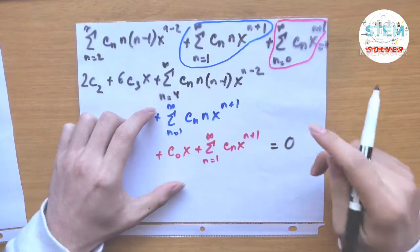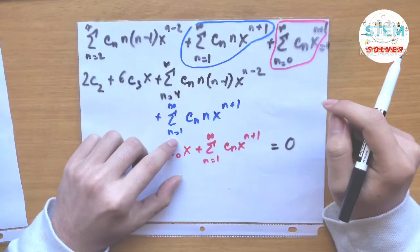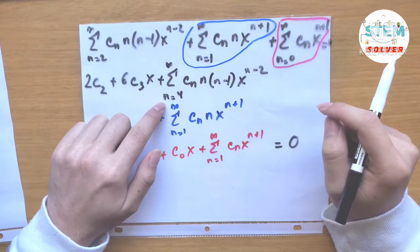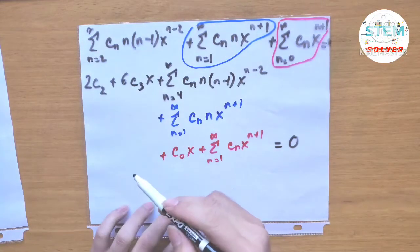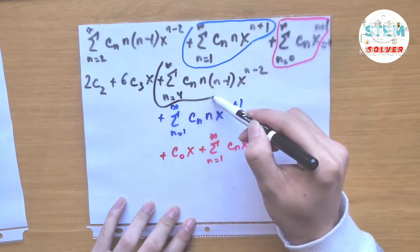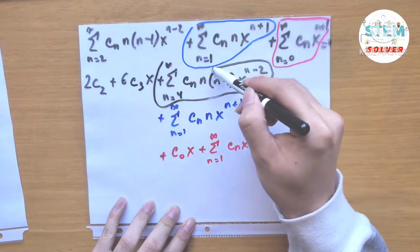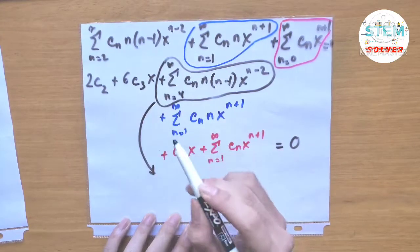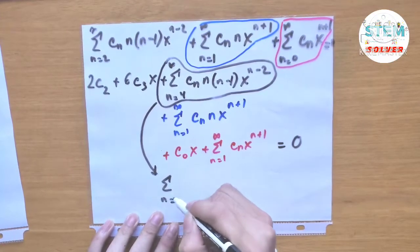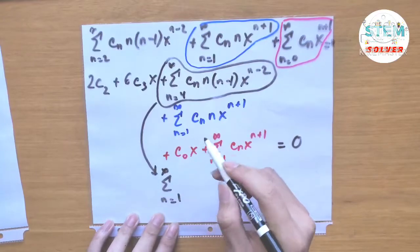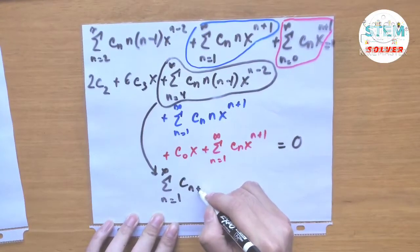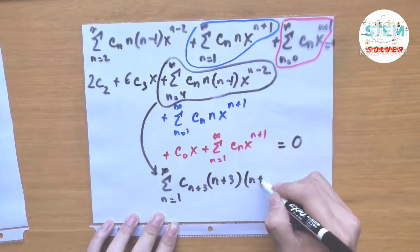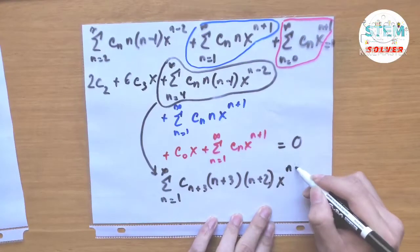Now let's look at the indices. We have starting indices n equals 4, n equals 1, and n equals 1, so we re-index the first series to start at n equals 1 by lowering by 3 — that means increasing every n inside by 3. So that series becomes: sum from n equals 1 to infinity of c_{n+3} times (n plus 3) times (n plus 2) times x to the n plus 1.